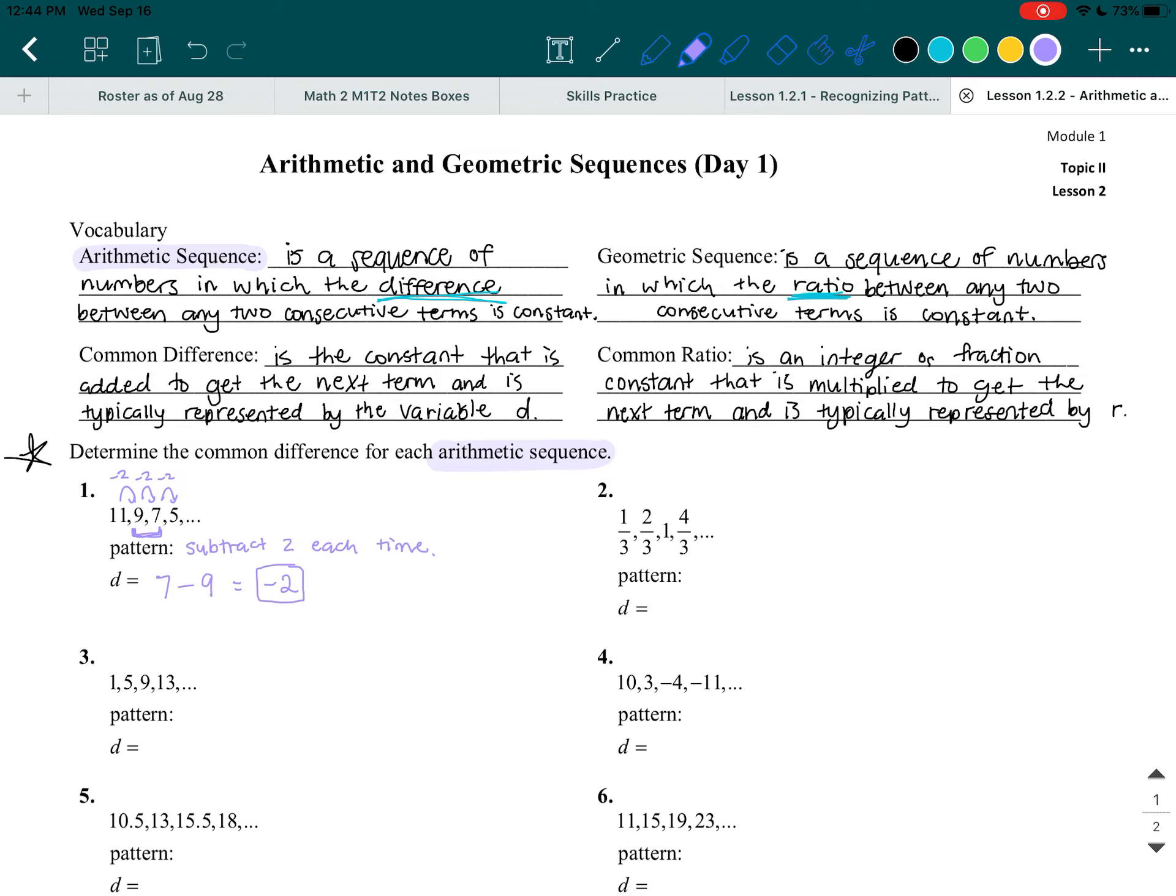So let's take a look at the next one, which looks harder because it's fractions, but fractions are not scary things. Fractions are just numbers, just like all the other numbers that you know. Fractions are regular old numbers. So in order to figure out the pattern, we know that we can take any two numbers. So for example, I can choose these two numbers. And I can take the second number and subtract the first number. And I will get positive 1 third.